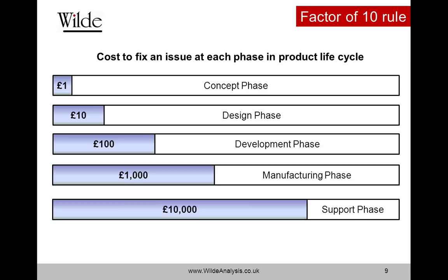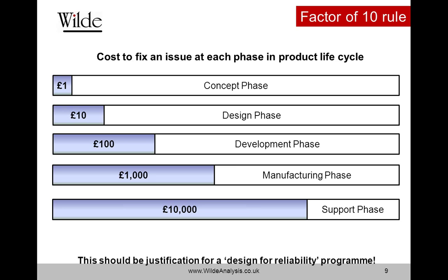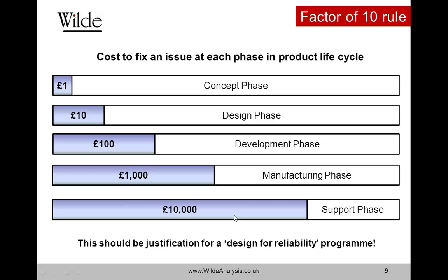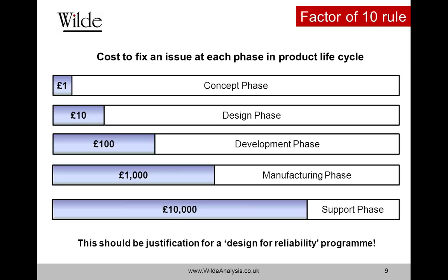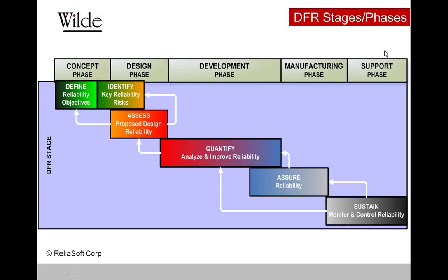A rule of thumb in the industry: the cost to fix an issue depends on where you find it in the product development cycle. If you find a problem in the concept phase, it's pretty cheap to do something about it and you've got enough time. If you let that problem cascade and only unearth it once your equipment is out in the field in large numbers, you're running an awfully high risk of high product cost — in terms of warranty or product recalls. This one slide in itself should be enough justification for establishing a design for reliability program in a business, but unfortunately it isn't always the case.